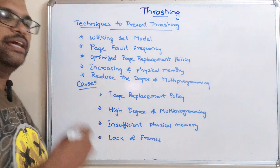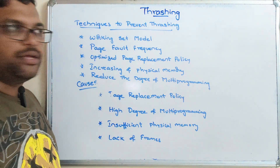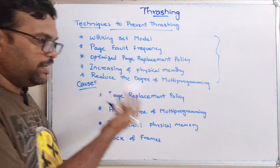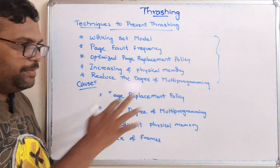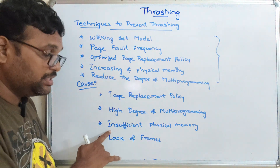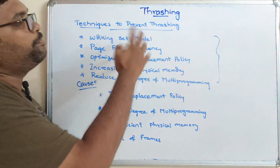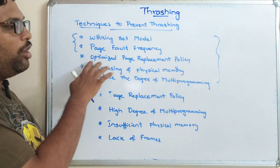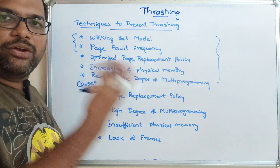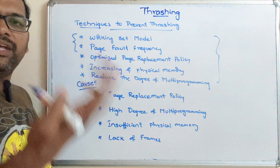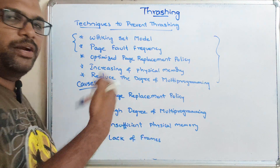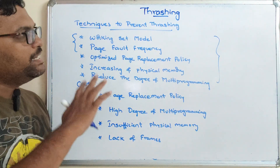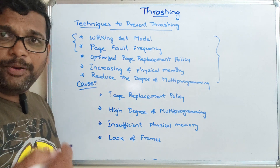If we reduce the number of processes being executed by the CPU, thrashing will not occur. To summarize the prevention techniques: working set model, page fault frequency, optimizing the page replacement algorithm, increasing physical memory (which increases frames and allows more pages to be accommodated), and reducing the degree of multiprogramming.